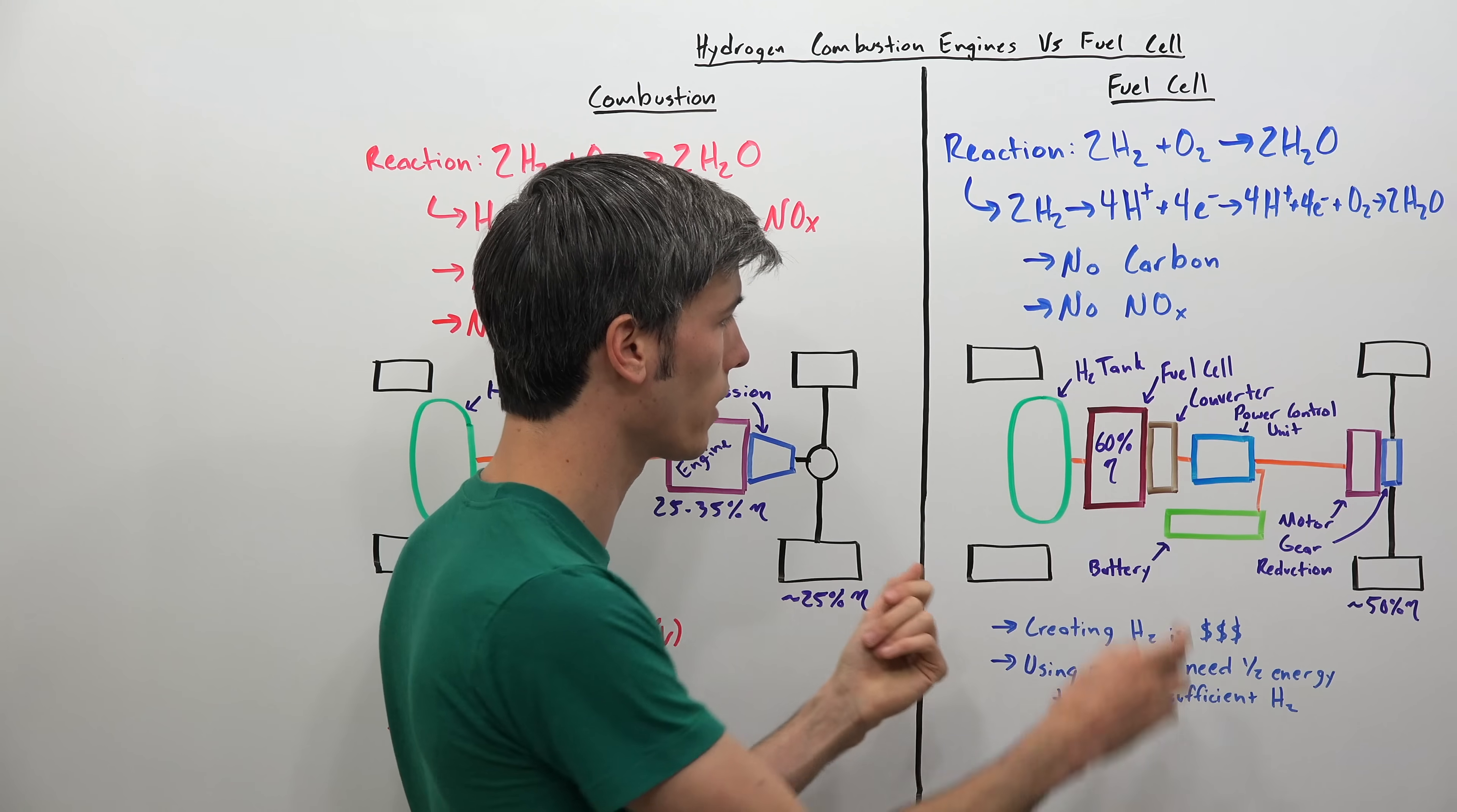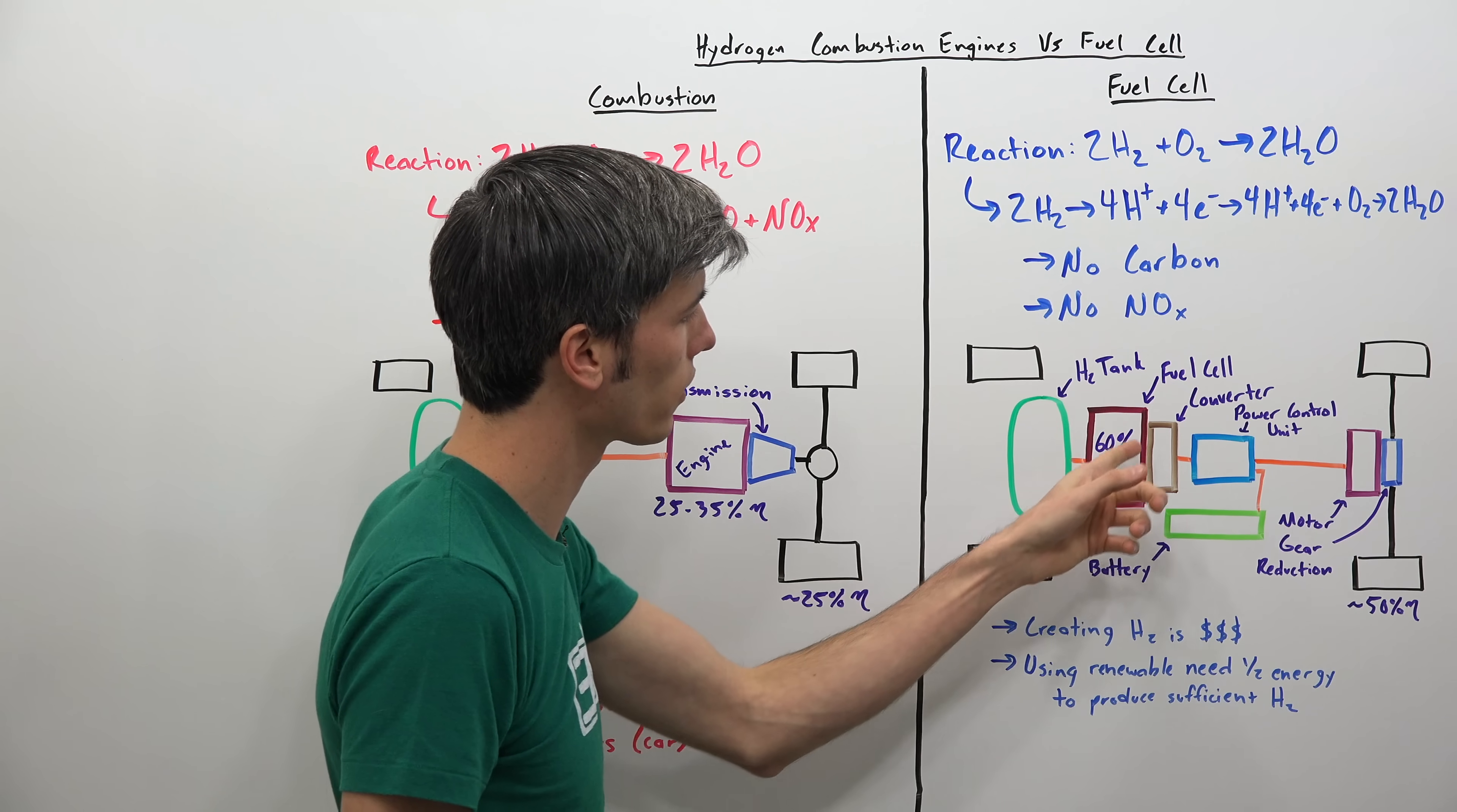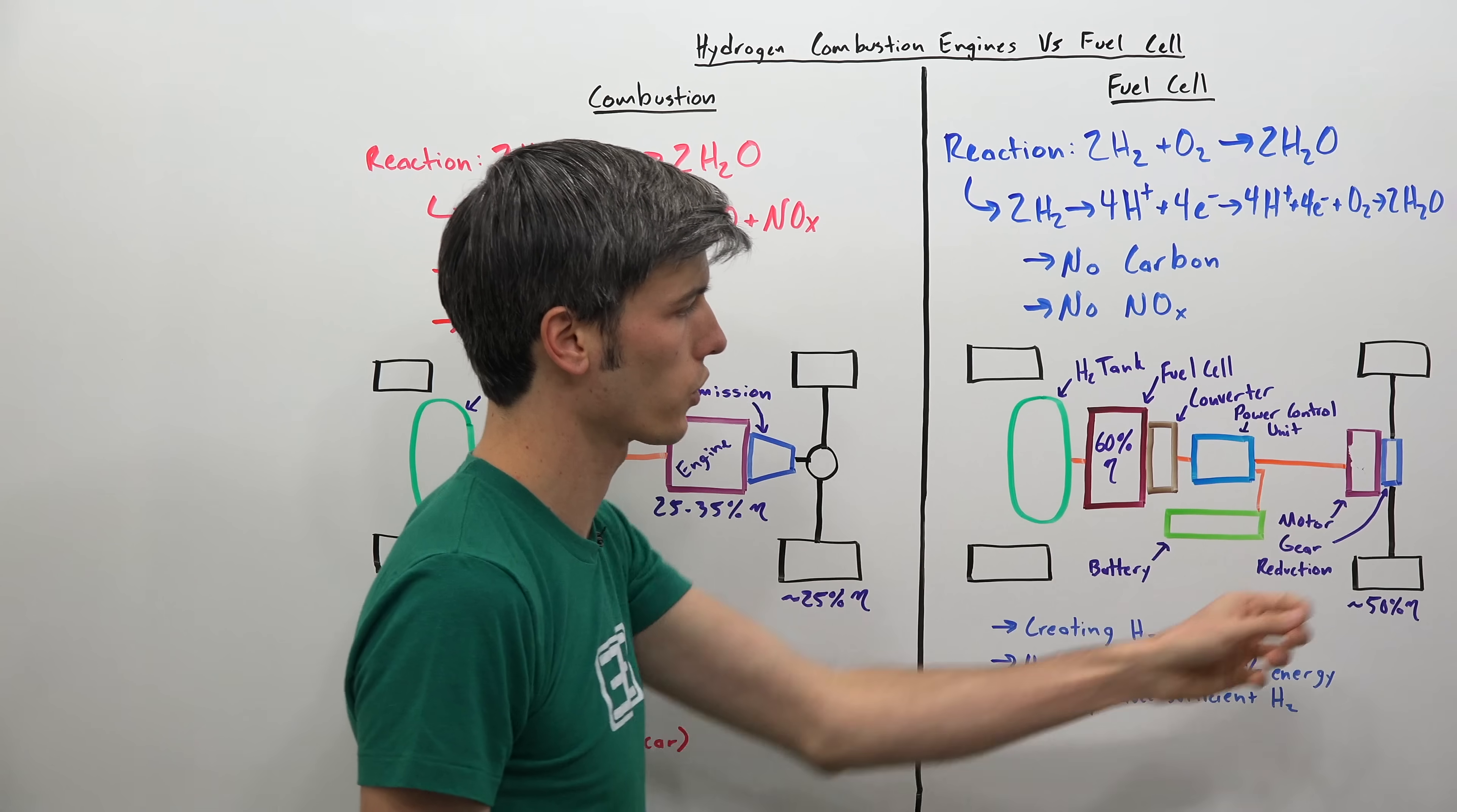Fuel cells, on the other hand, you start with a hydrogen tank. You send that hydrogen to the fuel cell. That's where this reaction right here is occurring. Then you create, you send those electrons off to do wonderful things. They go to the converter. This is operating somewhere around about 60% efficiency. Some could be better. Some could be a little bit worse. Sending from that converter to your power control unit, which then goes to your motor, your electric motor, and then from your electric motor to your gear reduction.